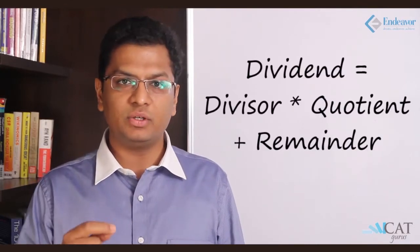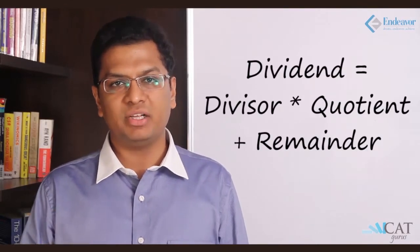When a number is divided by another number and then whatever the quotient is again divided. So let us look at the division algorithm first. Dividend is equal to divisor into quotient plus the remainder.